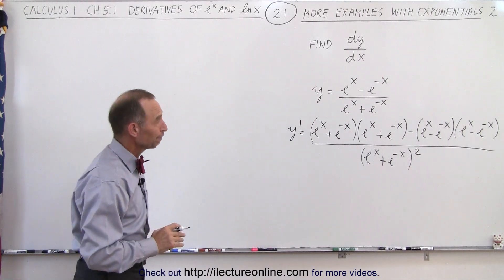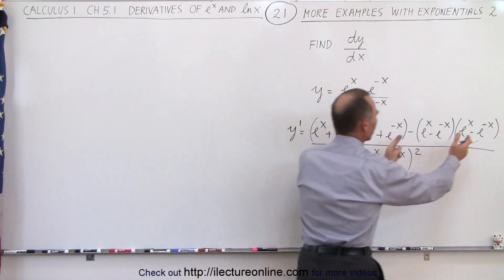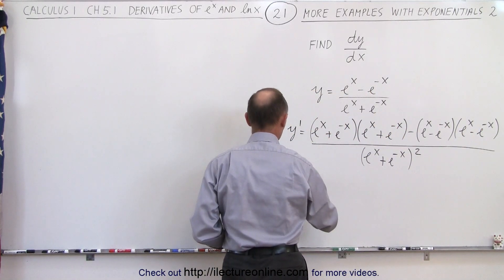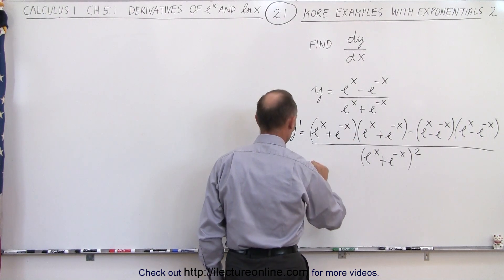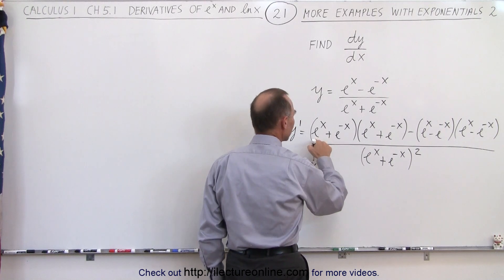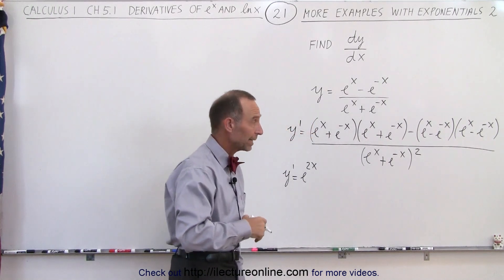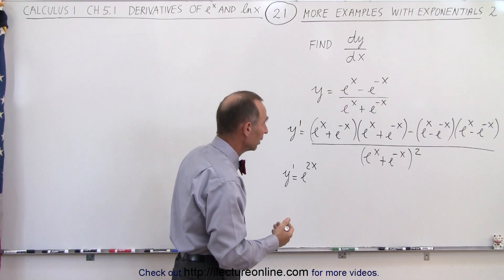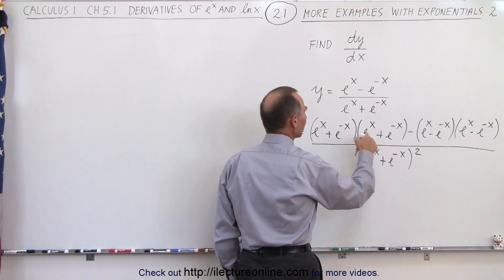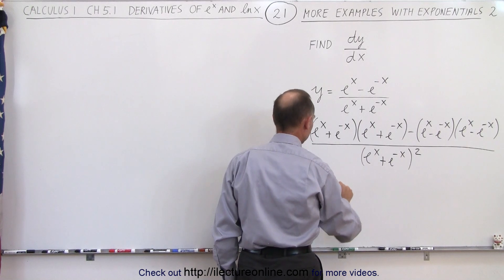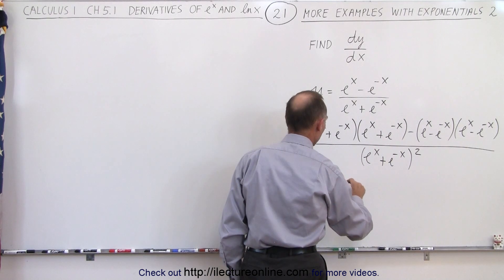Now we need to simplify. Let's multiply these together and subtract. So we have y prime equal to: eˣ · eˣ = e²ˣ; eˣ · e⁻ˣ = e⁰ = 1, so plus 1; e⁻ˣ · eˣ is also plus 1; and e⁻ˣ · e⁻ˣ = e⁻²ˣ.